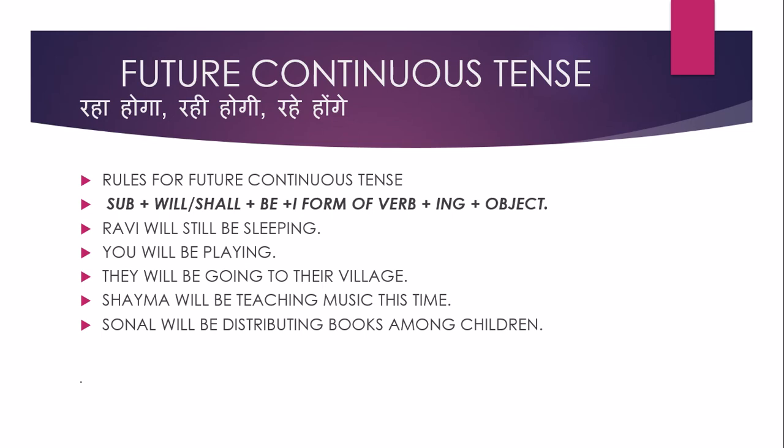इन वाक्यों की जो बनाने के रूल होता है, वो होता है: Subject + will/shall + be + first form of verb + ing + object. Future indefinite और continuous के rule में यह difference होता है कि इसमें 'be' आ जाता है helping verb के बाद — will be, shall be।